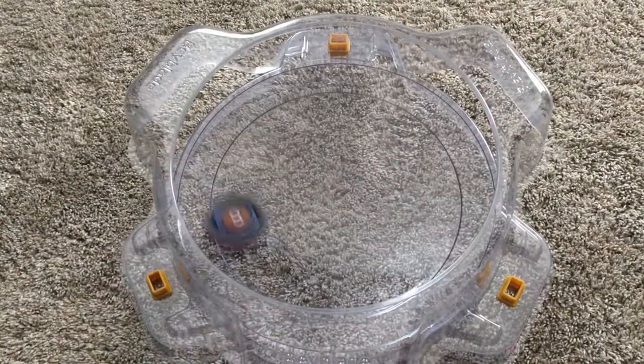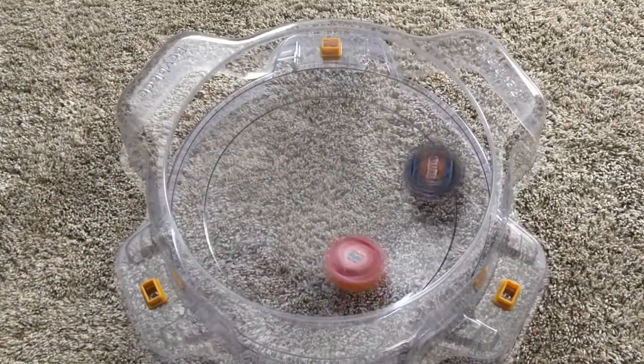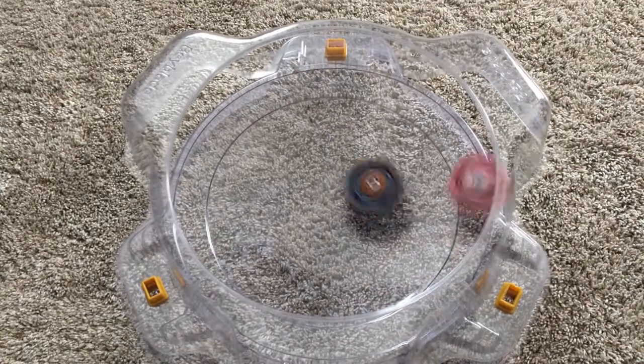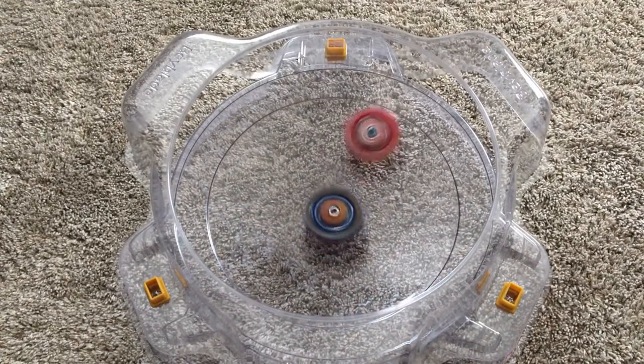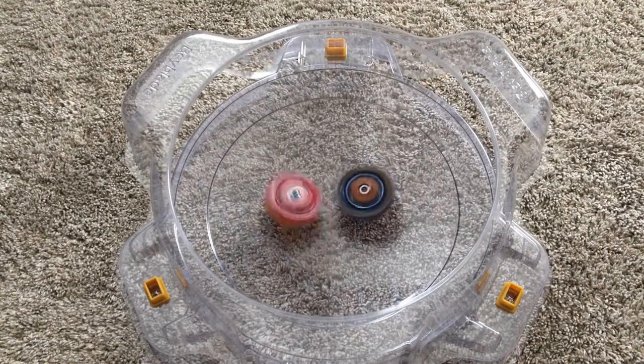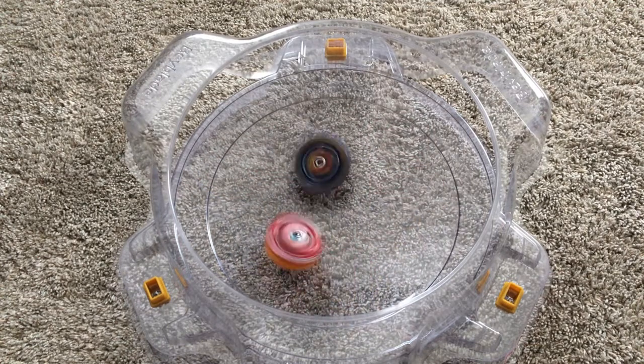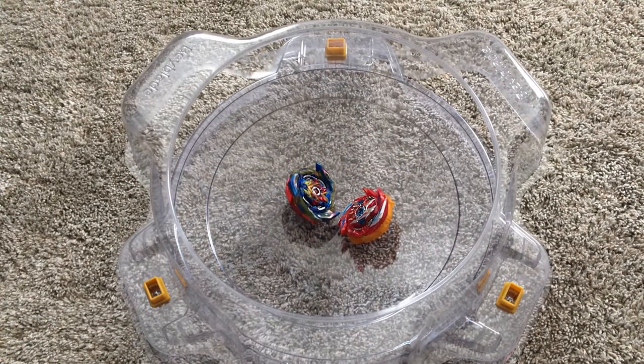Round 1. Let it rip. Very heavy attacks from both bays. Hyperion is taking the outside. It's going to come down to a contest of stamina. One point for Brave Valkyrie. The score is 1-0.